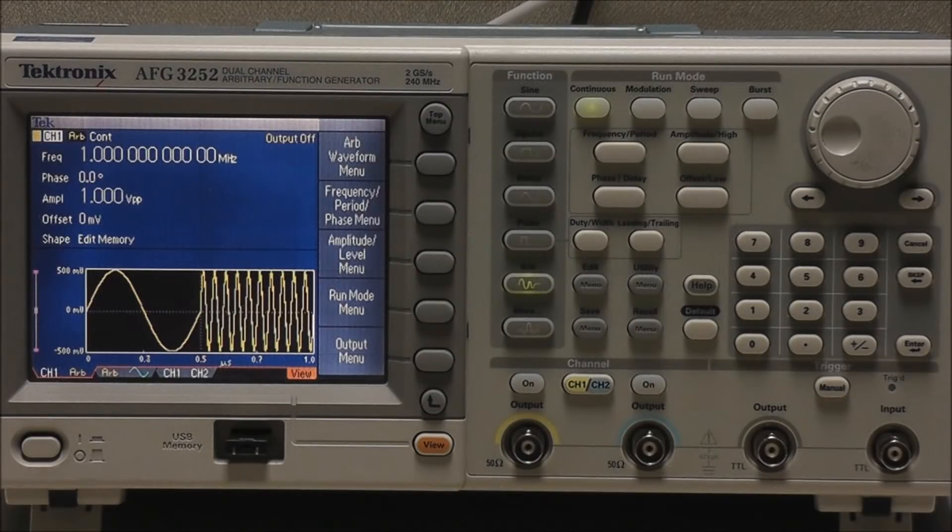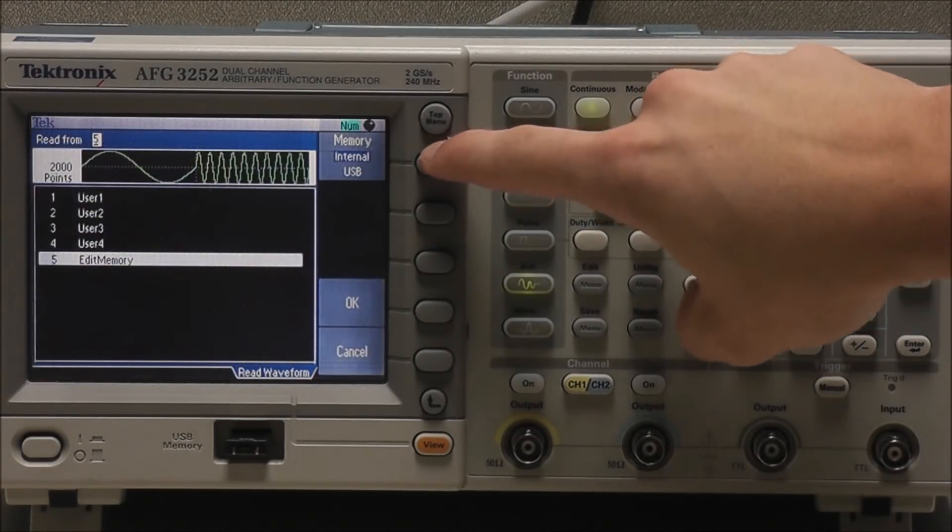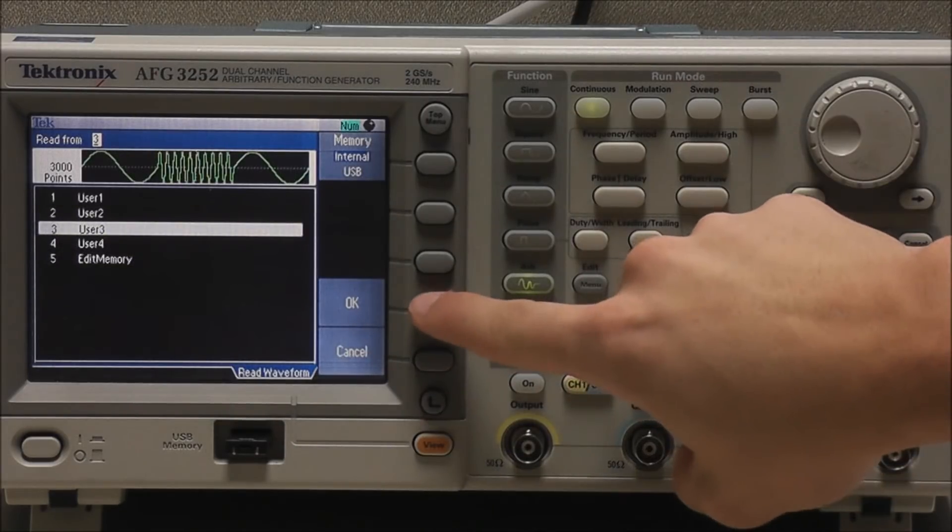Another way to output our waveform through a channel is after we've selected ARB, select Arbitrary Waveform Menu, Internal or USB, choose our file, and select OK.